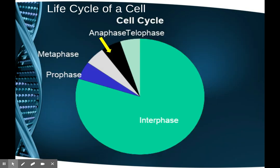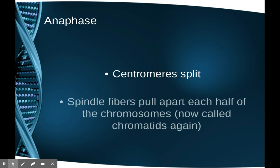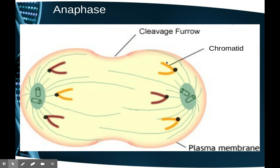That ripping is anaphase. Anaphase is when the centromeres split and the spindle fibers pull apart each half of the chromosomes. Because they're still coiled tightly but no longer joined as an X-shape, we call them chromatids again. These chromatids are pulled to opposite sides of the cell, and the cytoplasm in the middle starts to pinch closed as the cell gets ready to split.